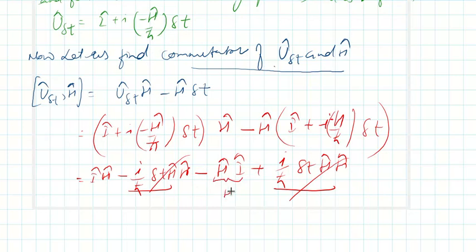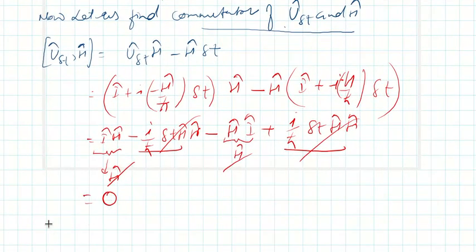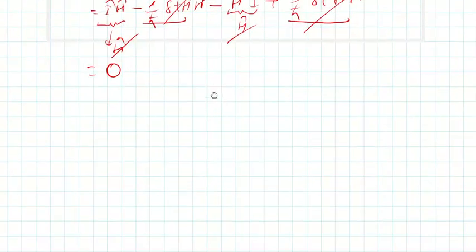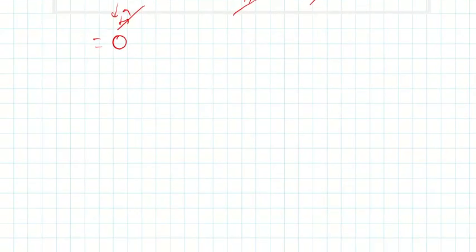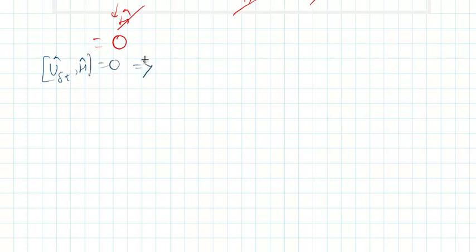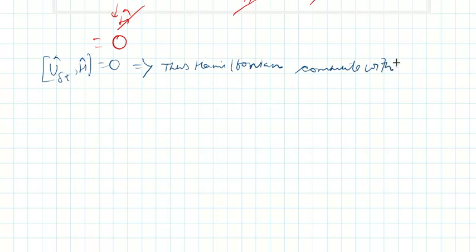After simplification, terms cancel out because they are equal and opposite, and overall this commutator becomes equal to zero. So the commutator of U(Δt) with the Hamiltonian is equal to zero, and thus the Hamiltonian commutes with the time evolution operator, which is the generator of time translation.